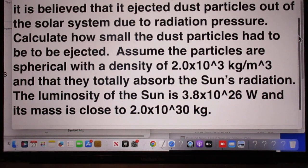The luminosity of the sun is about 3.8 times 10 to the 26 watts, and its mass is close to 2.0 times 10 to the 30 kg.